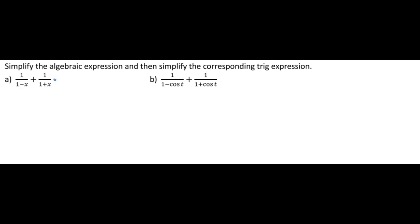So each one in this case actually does just need to get multiplied by whatever it's missing. So I'll multiply the fraction with the one plus x in the bottom by one minus x top and bottom, and I'll multiply the fraction with the one minus x by the one plus x top and bottom.